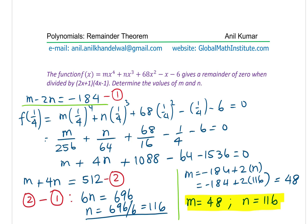Now we have both values: M = 48 and N = 116. At this stage I think you have understood the process. So the full polynomial f(x) is: 48x⁴ + 116x³ + 68x² - x - 6.